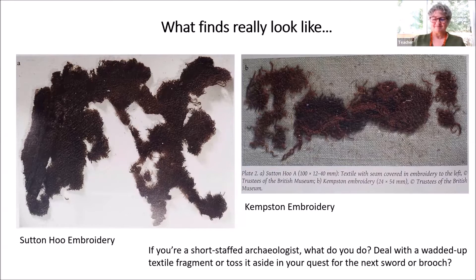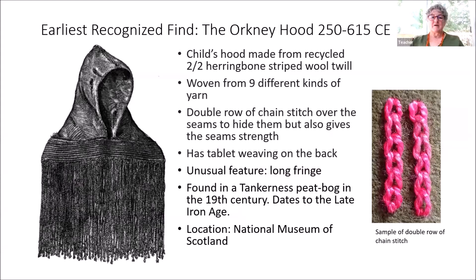The first find we're going to talk about is the earliest: the Orkney Hood, from somewhere between 250 and 615 CE. It is a child's hood made from recycled wool twill, with nine different kinds of yarn. There's a double row of chain stitch over the seams to hide them, which also gives the seams strength. So this is our first bit of embroidery.